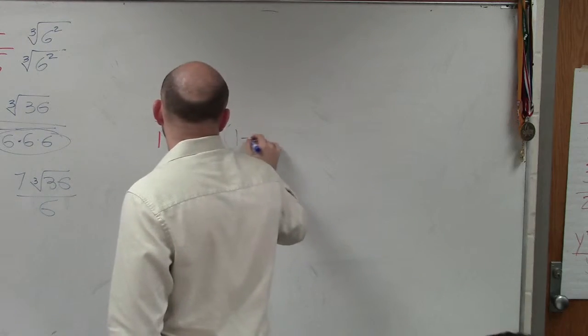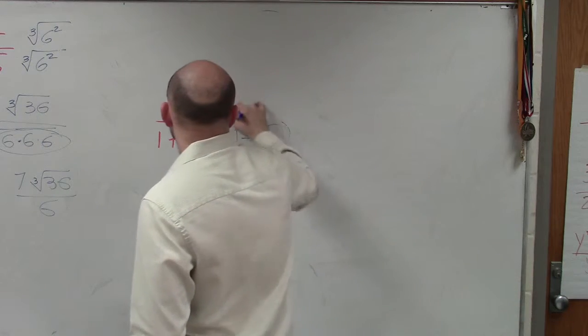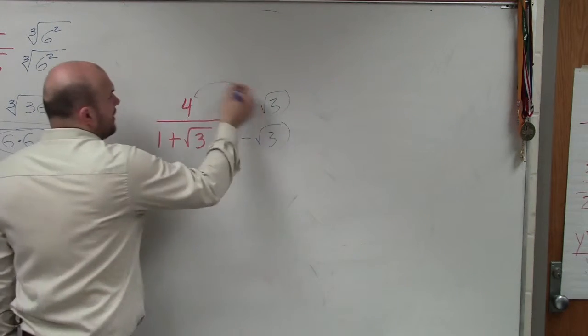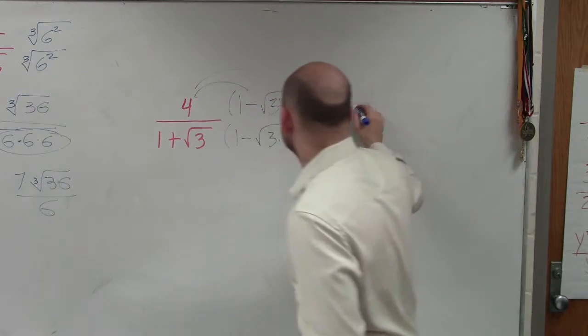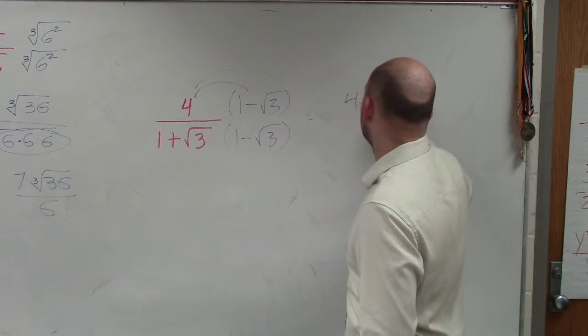So therefore, I'm going to have to multiply by the conjugates. So I apply distributive property up top and I have 4 minus 4 square root of 3.